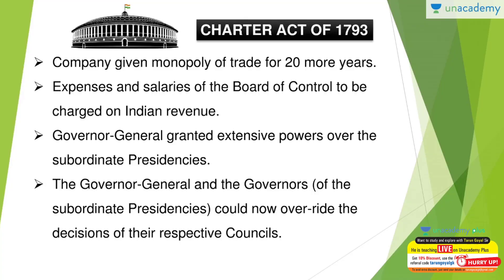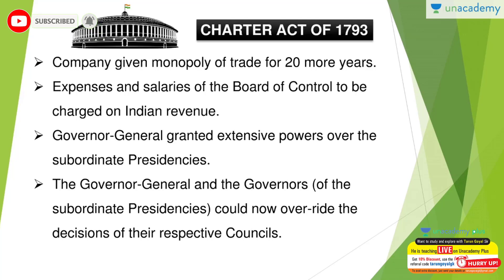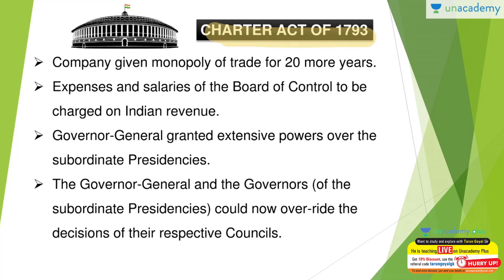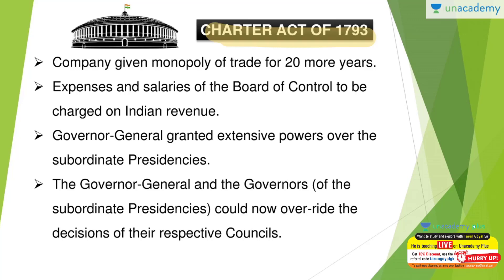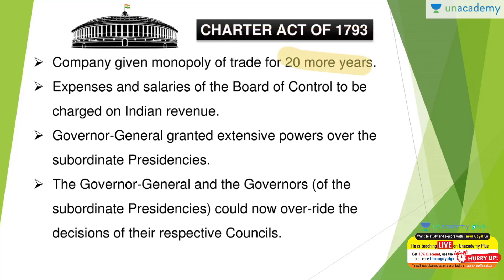Now moving on to the Charter Act of 1793 — questions on this can definitely be expected. UPSC normally frames questions from parts you think are difficult. Looking at this Charter Act of 1793 carefully, the East India Company was a monopoly company formed for India and the East. Under this act, its monopoly was continued for only 20 years, after which its trade monopoly would be taken away. So that is one important point — the monopoly was continued for 20 years.